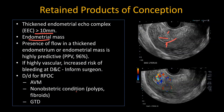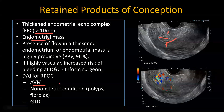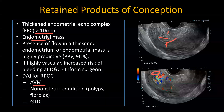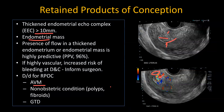Important differentials to consider include AVM. In AVMs, the vascularity is centered on the myometrium, whereas in RPOC the vascularity is centered on the endometrium. AVMs are usually very vascular — the peak systolic velocities are going to be above 200 to 300 cm/s — and they'll have a lot of diastolic flow. That's what distinguishes an AVM from RPOC.